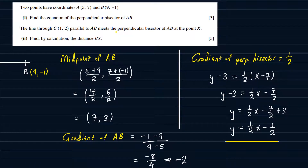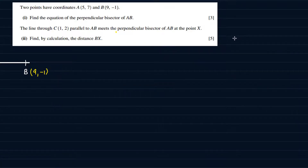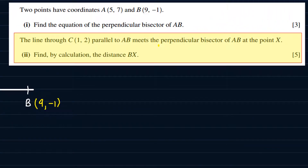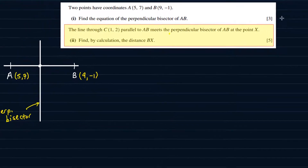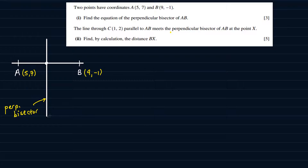Now we want to go to the second part of the question. So let's go to the next part. The line through C with coordinates (1, 2), parallel to AB, meets the perpendicular bisector of AB at the point X. Remember we got the equation of the perpendicular bisector to be y = ½x − ½.